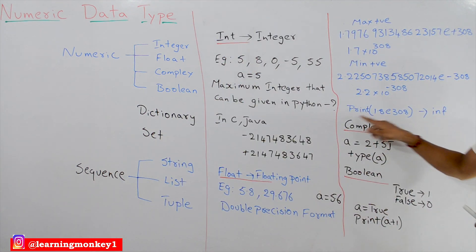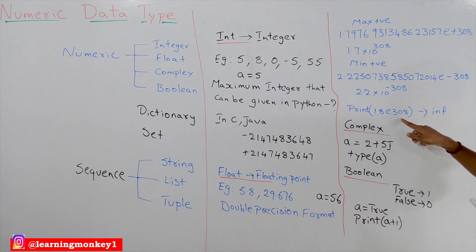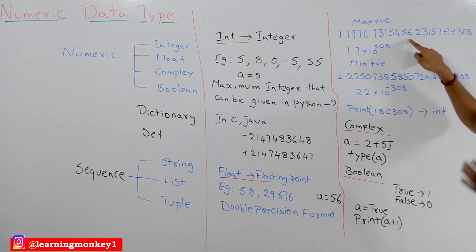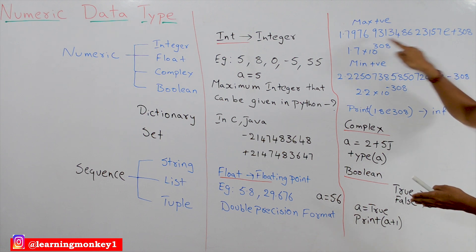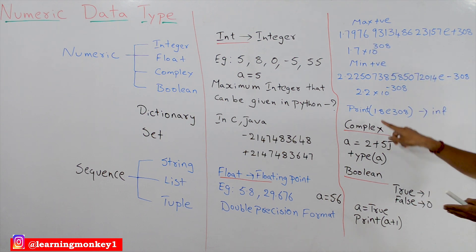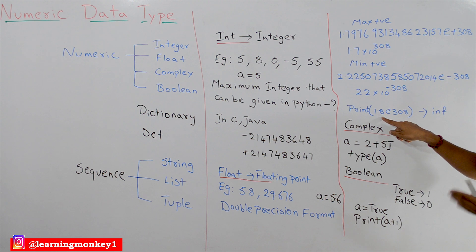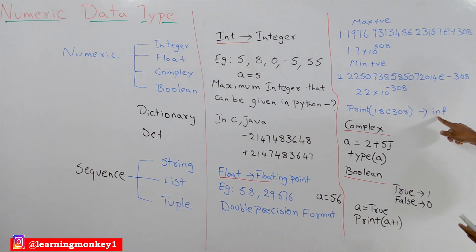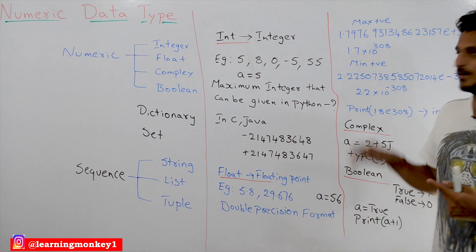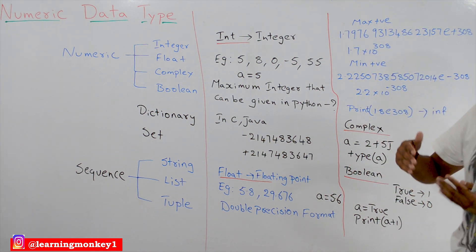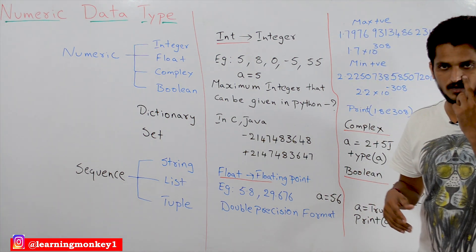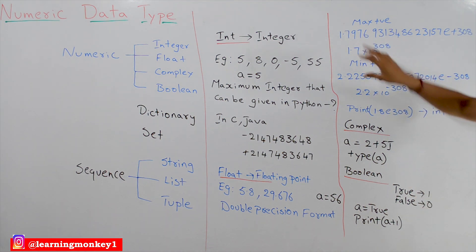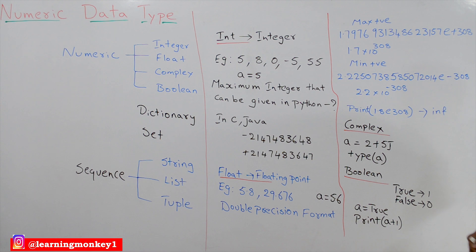Let us take an example: print 1.8E308. The maximum value representable using double precision format is about 1.79-something. Here we mentioned 1.8, which exceeds that maximum. In Python it will show it as INF — meaning infinite. Above this number, anything is considered as infinite value. This is all about floating point representation in Python.